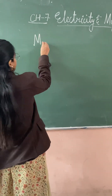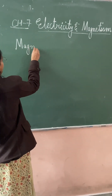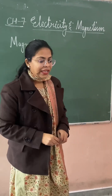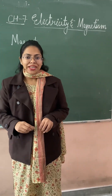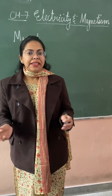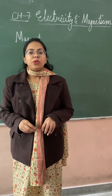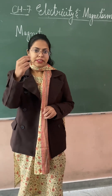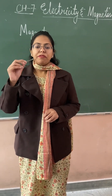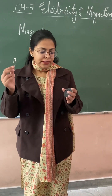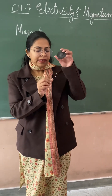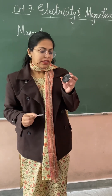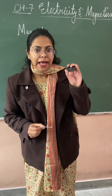Our first topic will be magnet. What is a magnet? Any substance which attracts iron or any magnetic material is known as a magnet. Like here you can see, this is a safety pin — it is made up of stainless steel — and the magnet inside is attracting this pin. So this is what? This is a magnet.